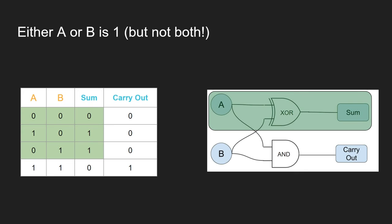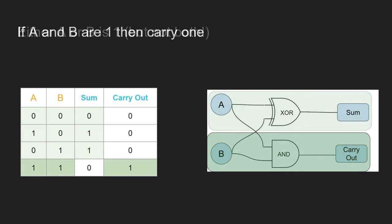What about if A and B are both on? We need to carry out 1. That's where our AND gate comes in. If A and B are both 1, then we output 1 to the carry out. That's a half adder — really quite simple.